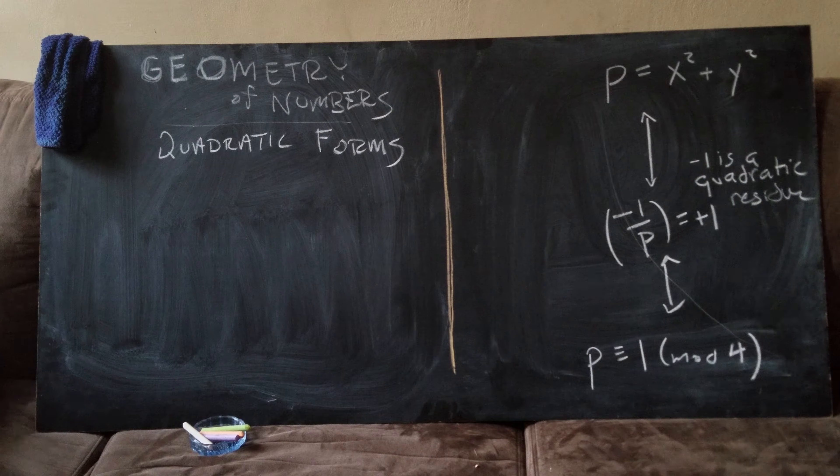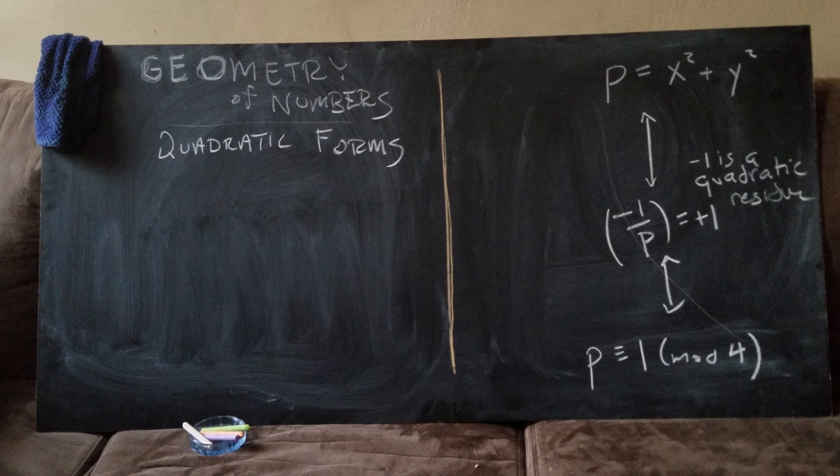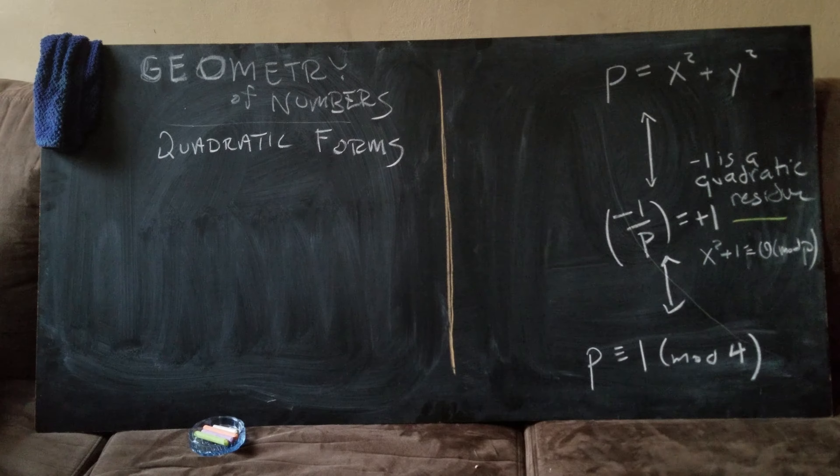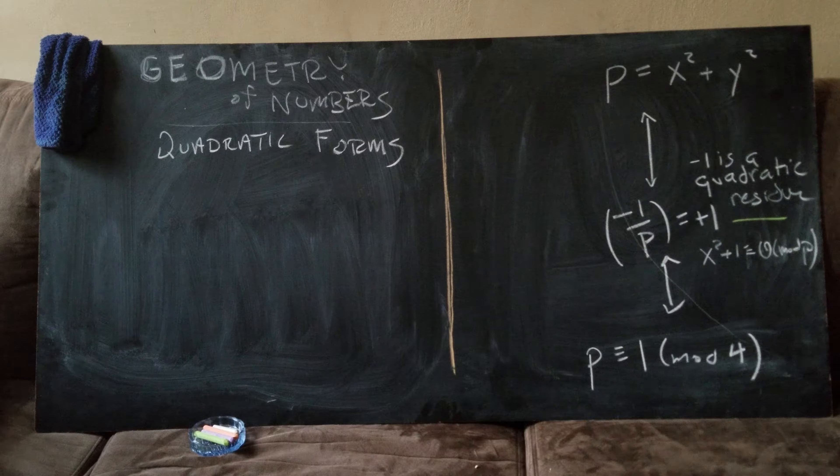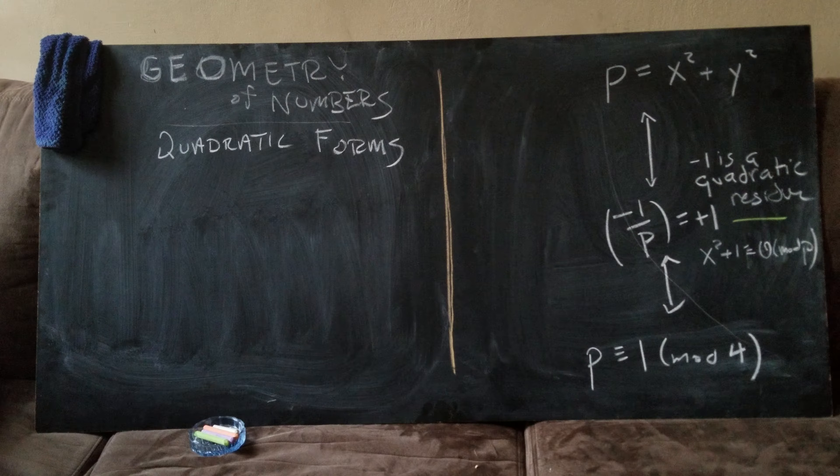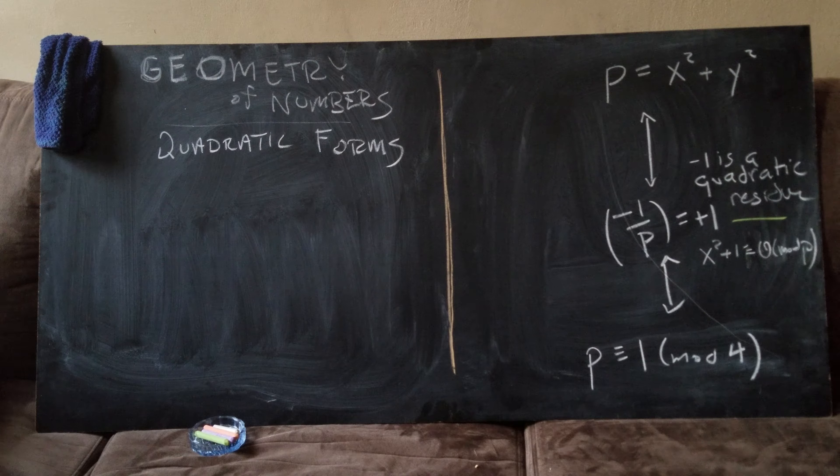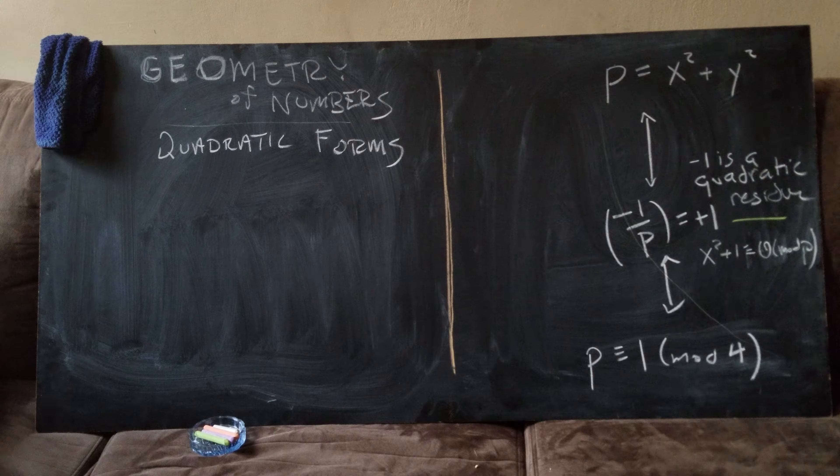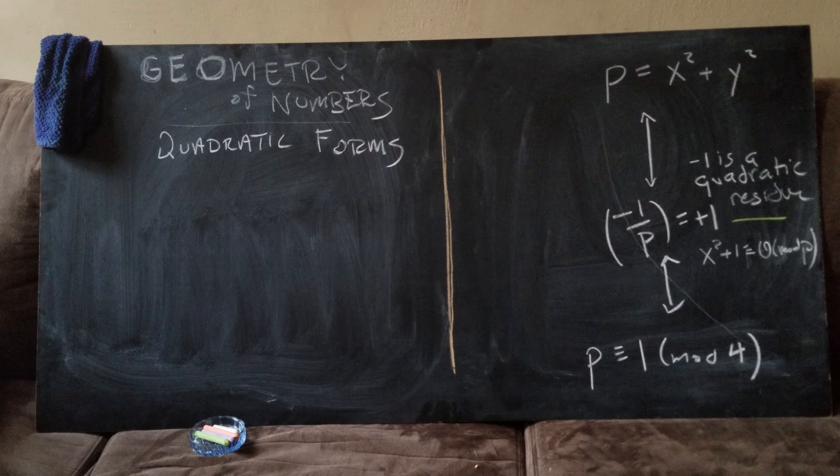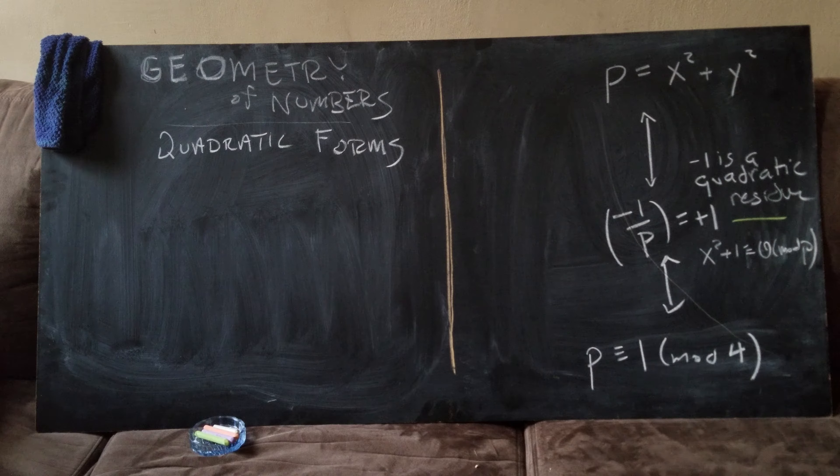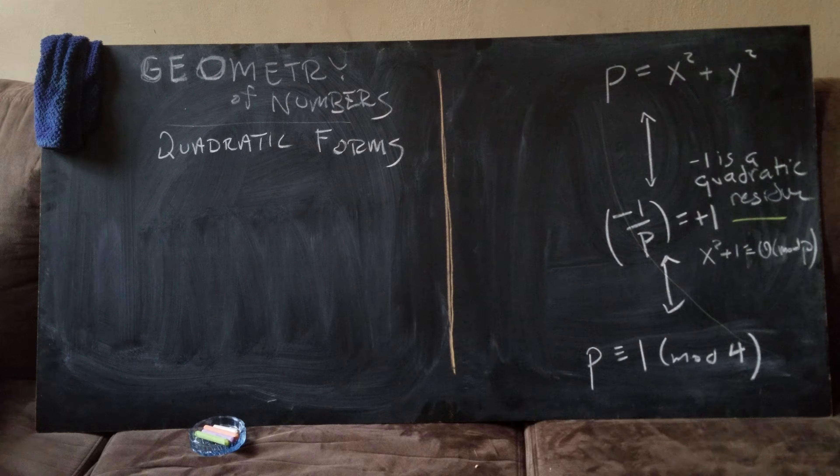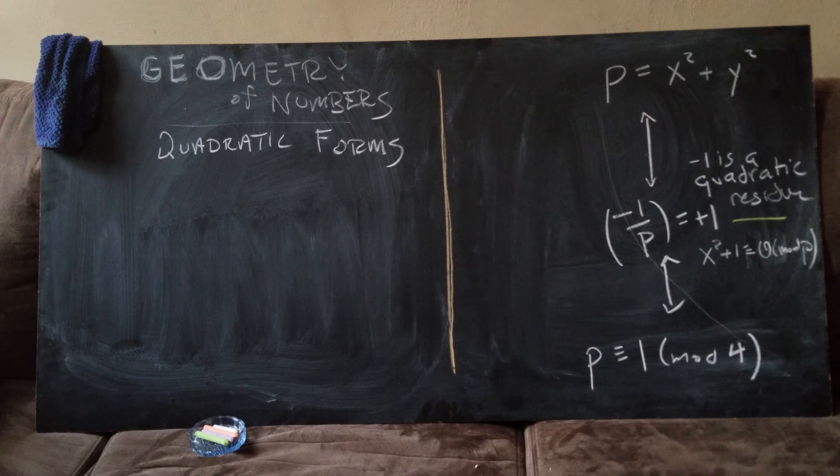It's another way of saying x squared plus one equals zero mod p has a solution. So we say all numbers have square roots, but they don't - only half of them do. Or we could say that p is a prime number and it's one mod four.